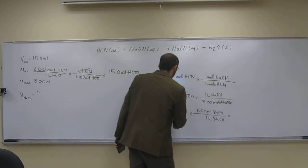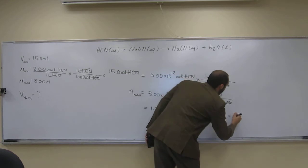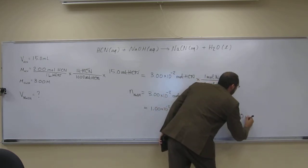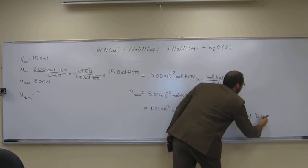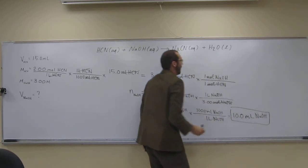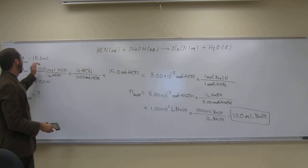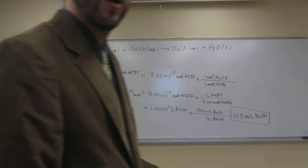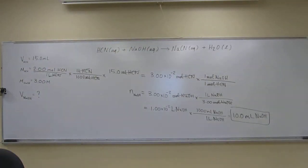And we get the answer that we would have expected, of course. 10.0 milliliters of NaOH will fully titrate 15 milliliters of 2.00 molar HCN. So it's just a logical stepwise process. Don't make it harder than what it is. Just think.